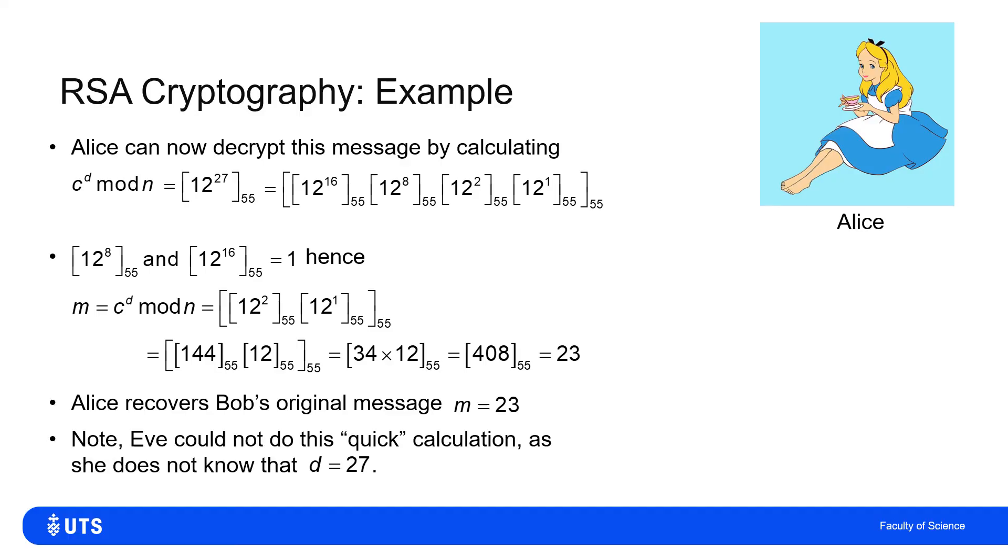The thing to note here is that any eavesdropper coming in could not do that. They couldn't do that quick calculation because they hadn't got this d equals 27. Only Alice knew that. And the way that she was able to work that out was that she knew the prime factorization of n. And without that, this whole process can't be done quickly.